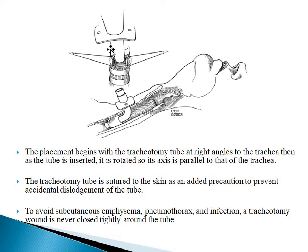The tracheostomy tube is first placed at right angles to the trachea, then after insertion it is rotated to become parallel to the trachea. The tracheostomy tube is sutured to the skin as an added precaution to prevent accidental dislodgement. To avoid subcutaneous emphysema, pneumothorax, and infection, the tracheostomy wound is never closed tightly around the tube.